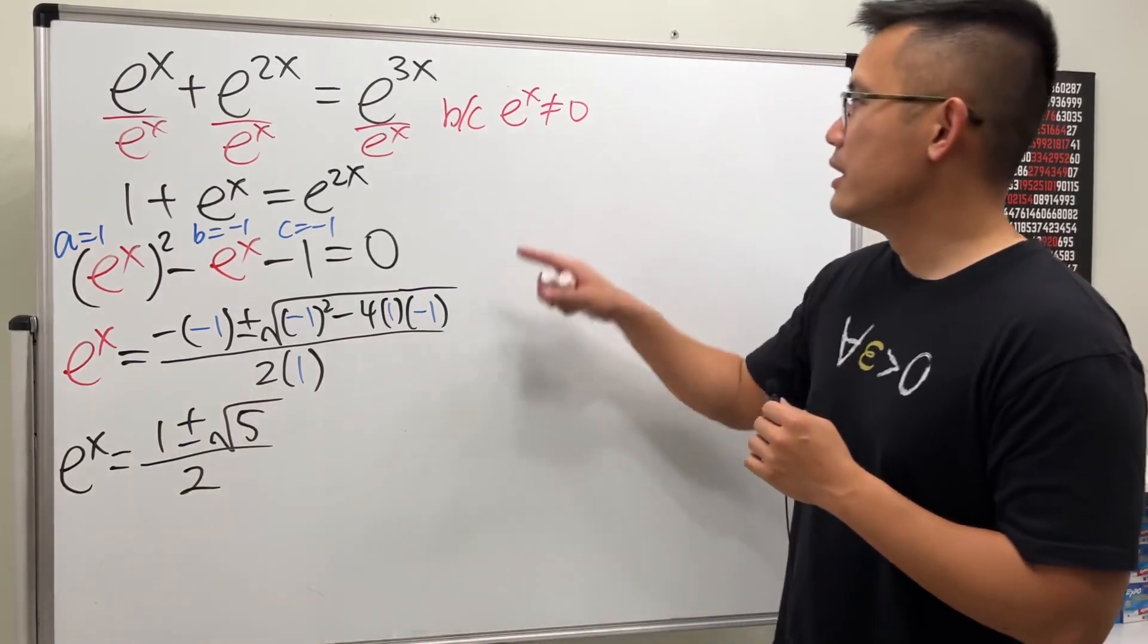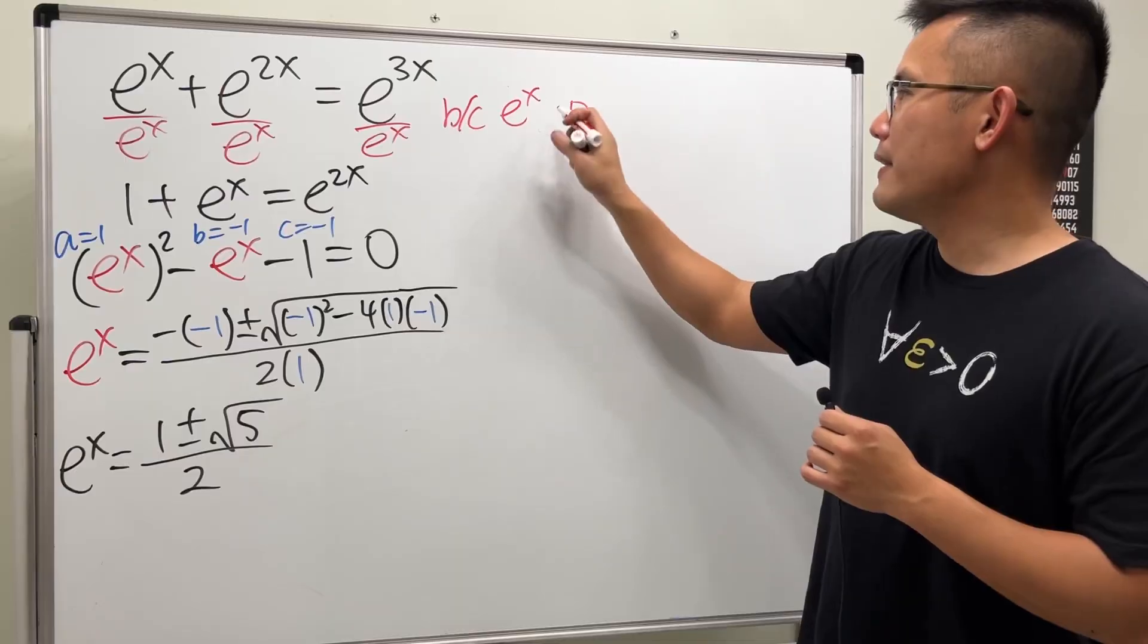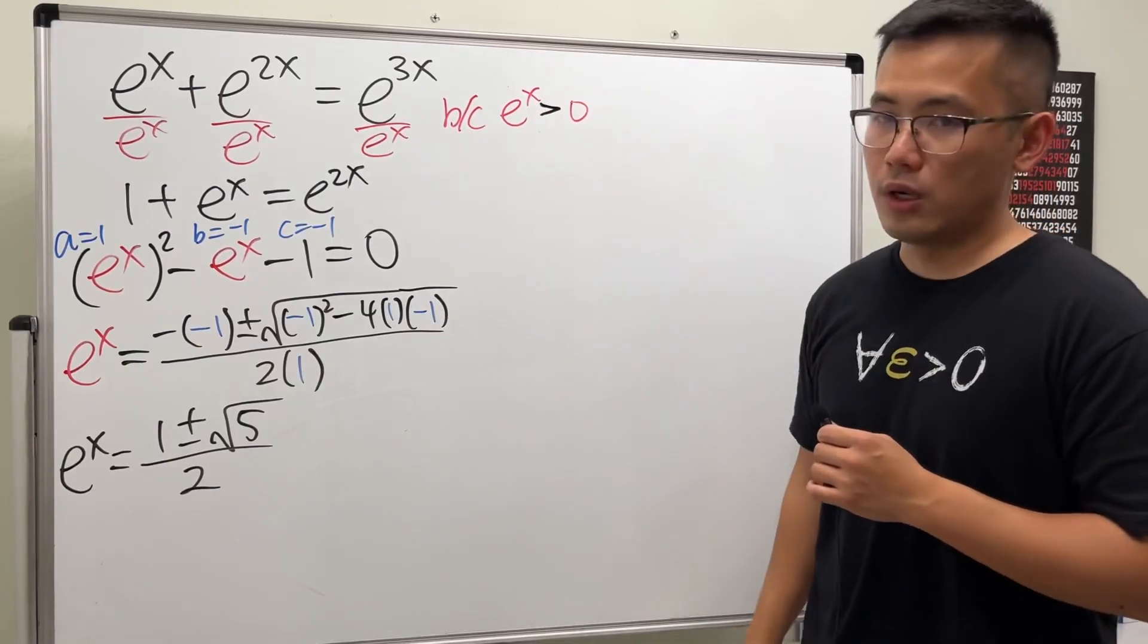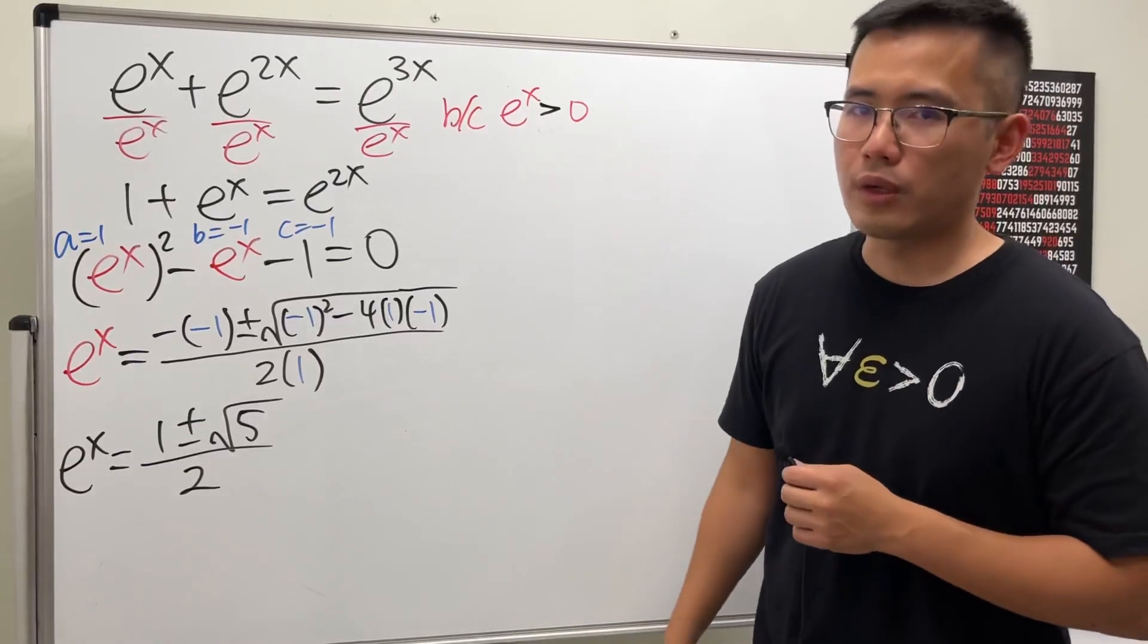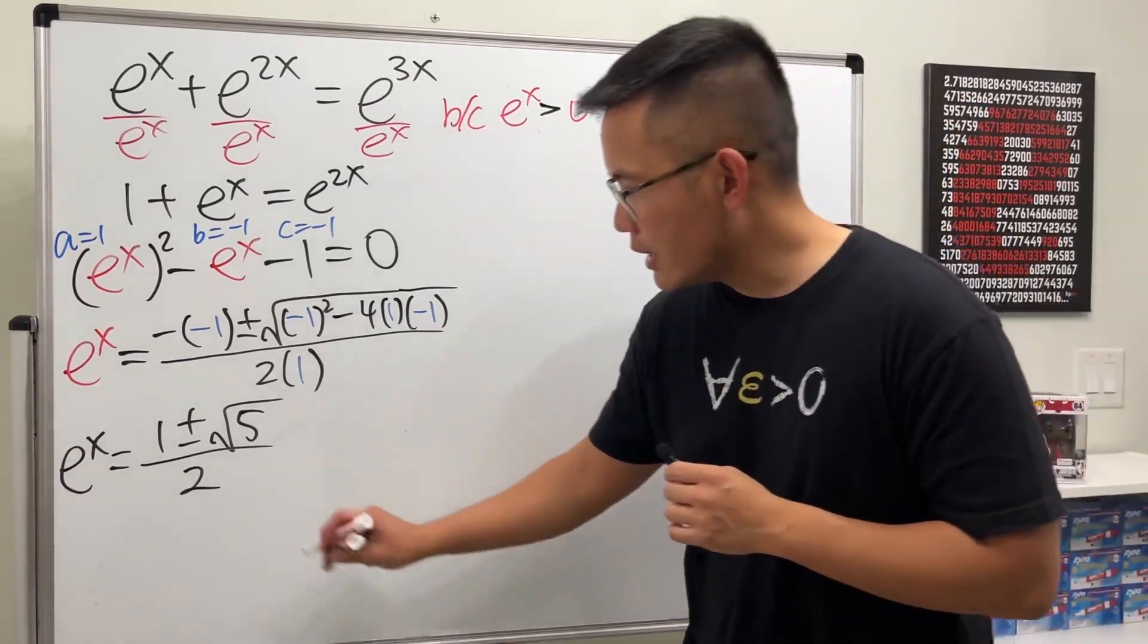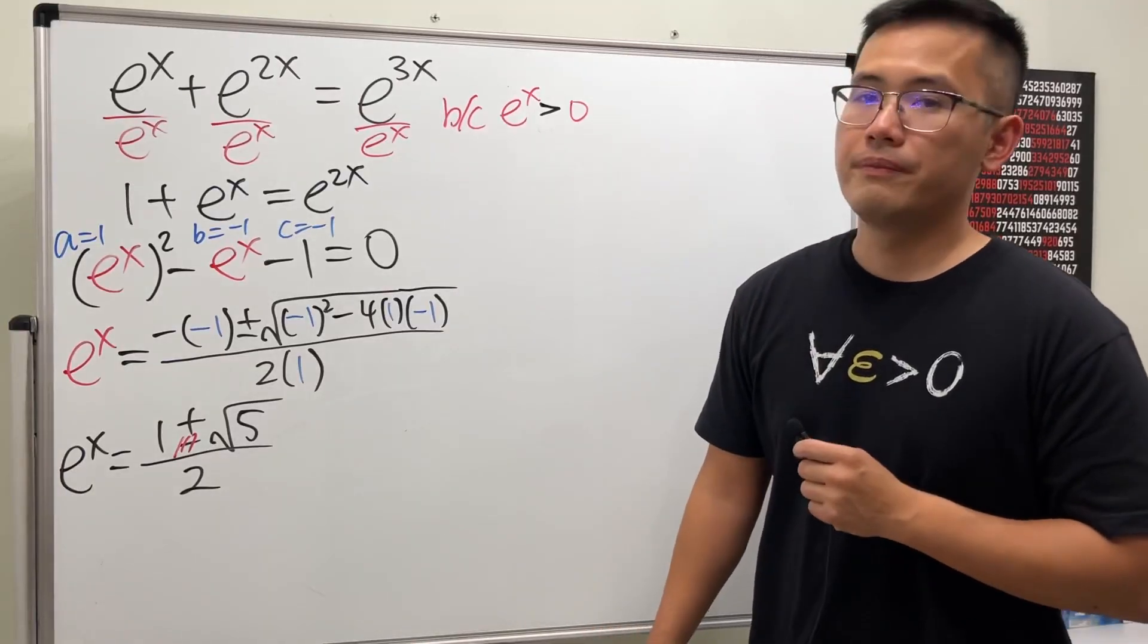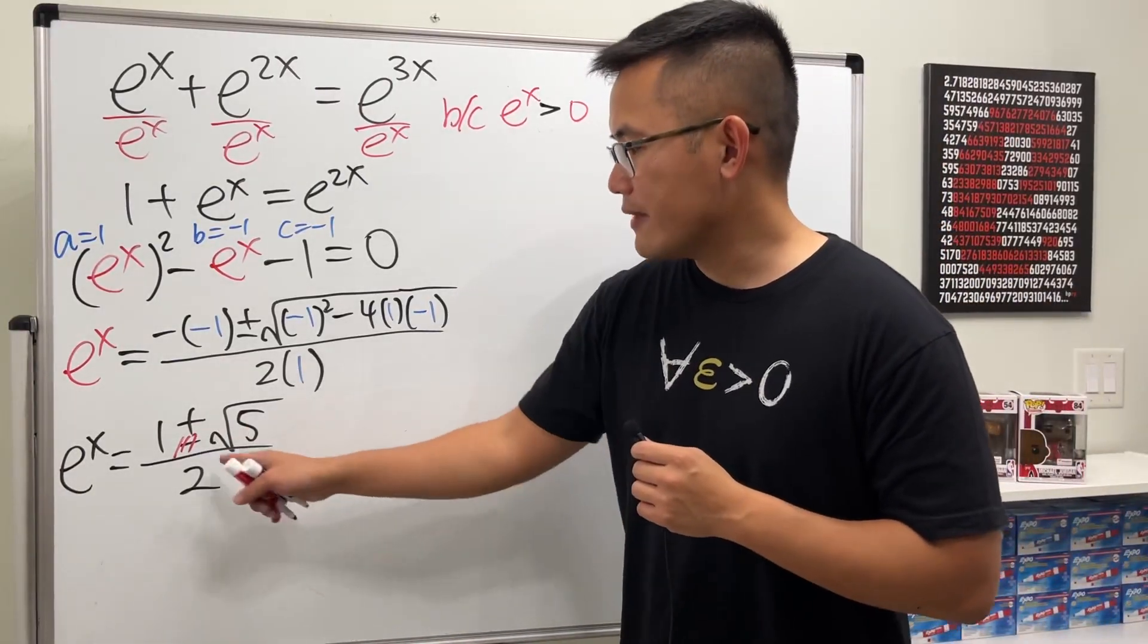e^x, not only is it never equal to 0, but in fact, it's always greater than 0. We cannot have this being equal to negative unless we go to a complex row, but we are not going to. So let's just go ahead and get rid of the negative. 1 plus square root of 5 over 2. I know I'm wearing the wrong shirt,